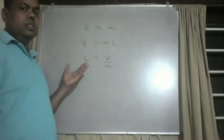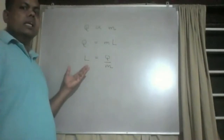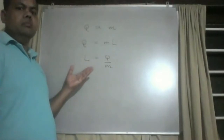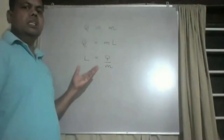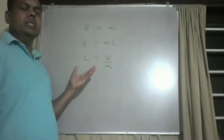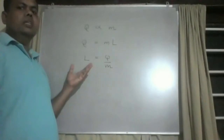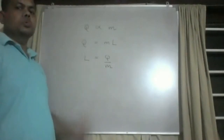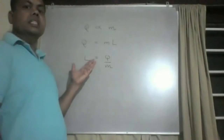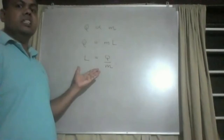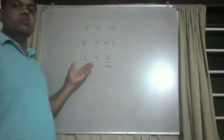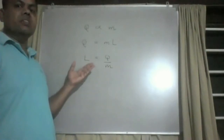The SI unit of L is joules per kilogram. The dimensions of L are L² T⁻². We can define the specific latent heat of fusion as the amount of heat energy required to change the state of a substance.